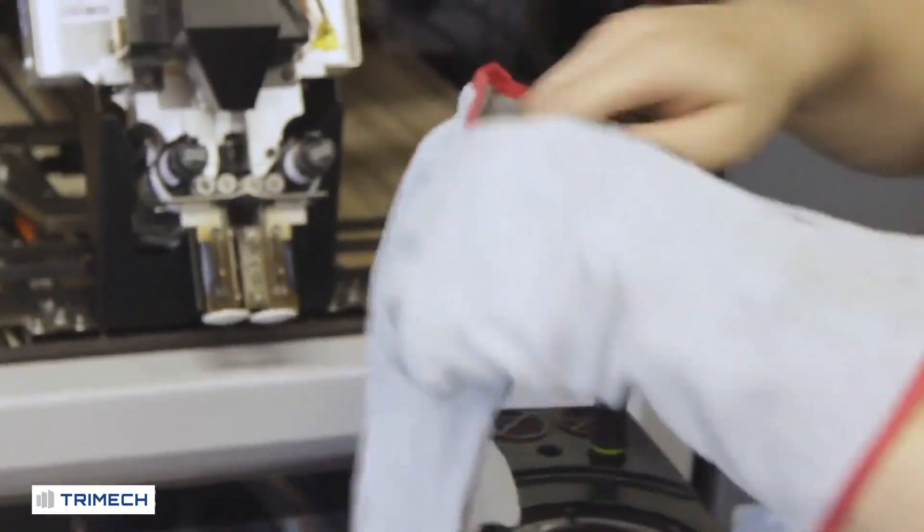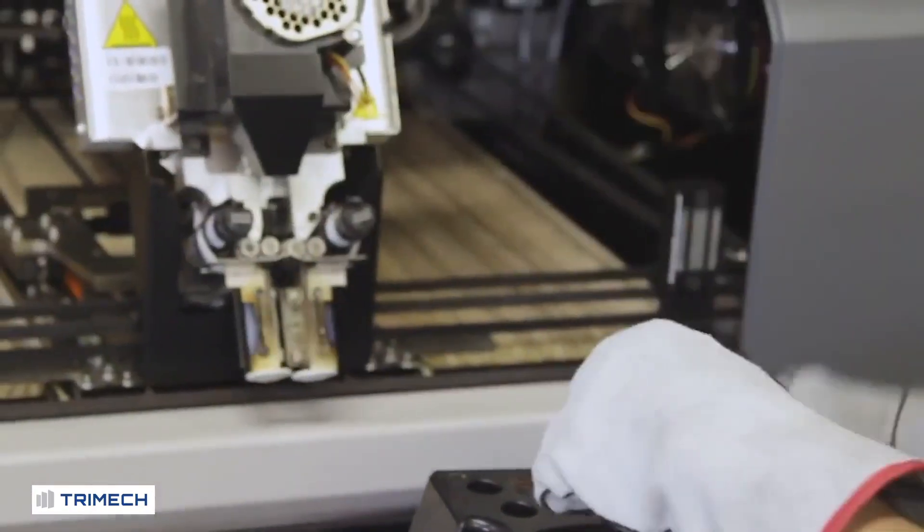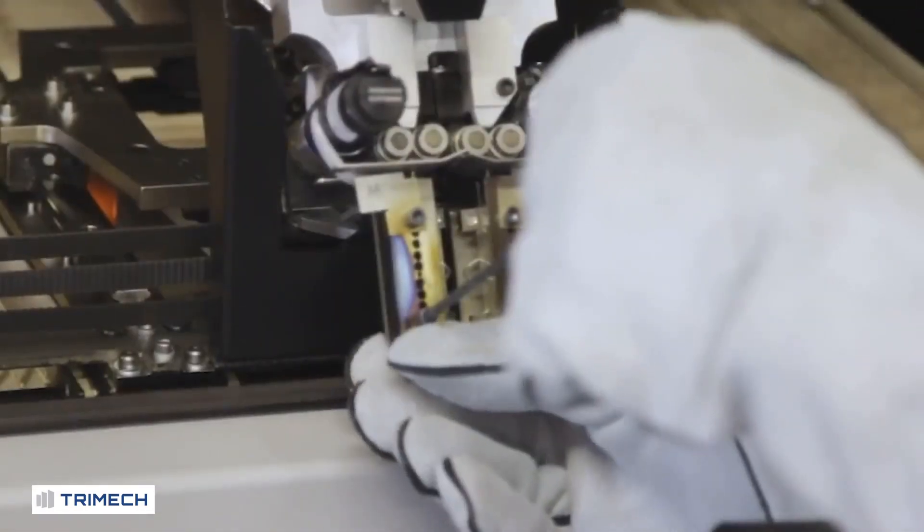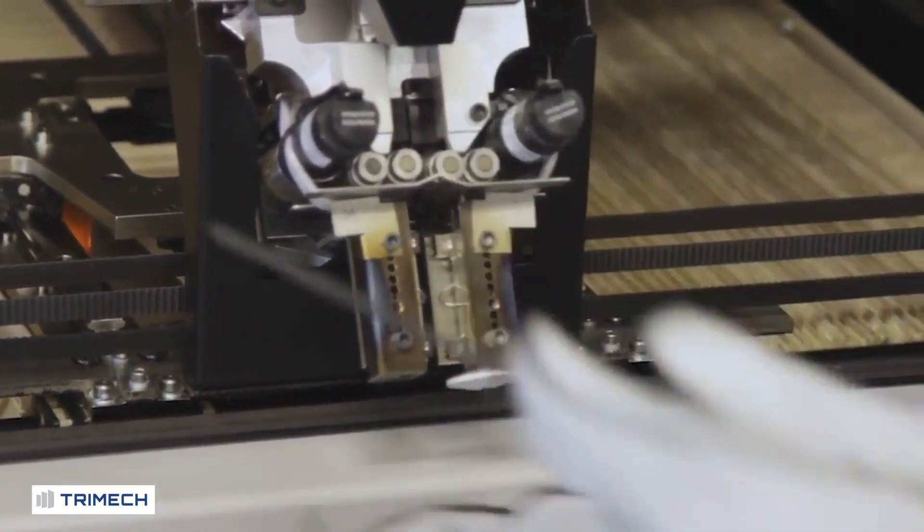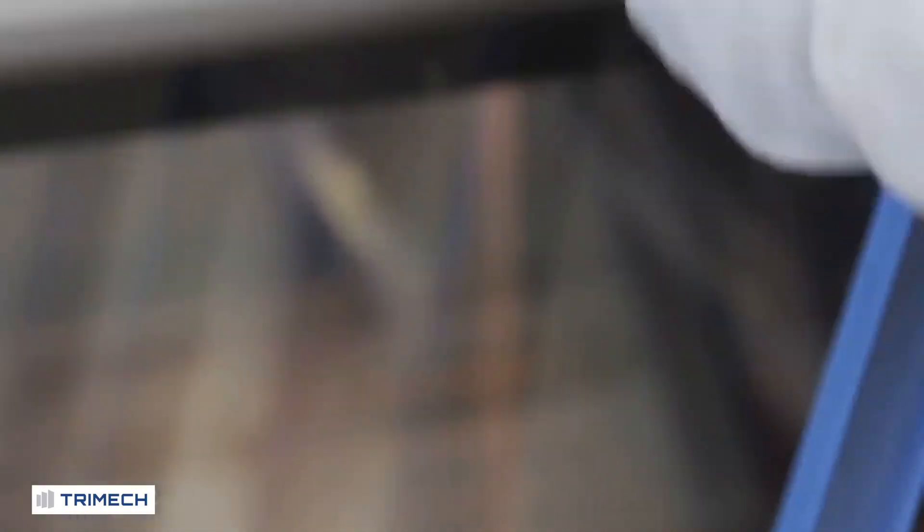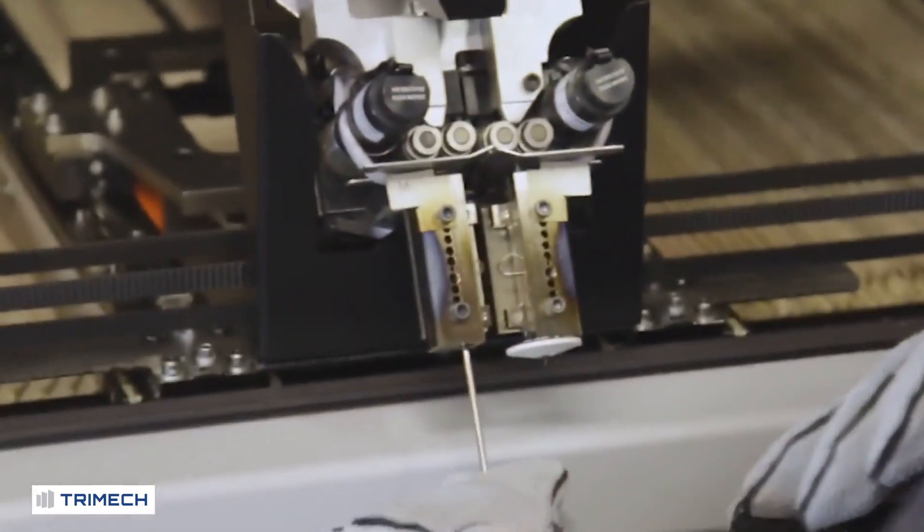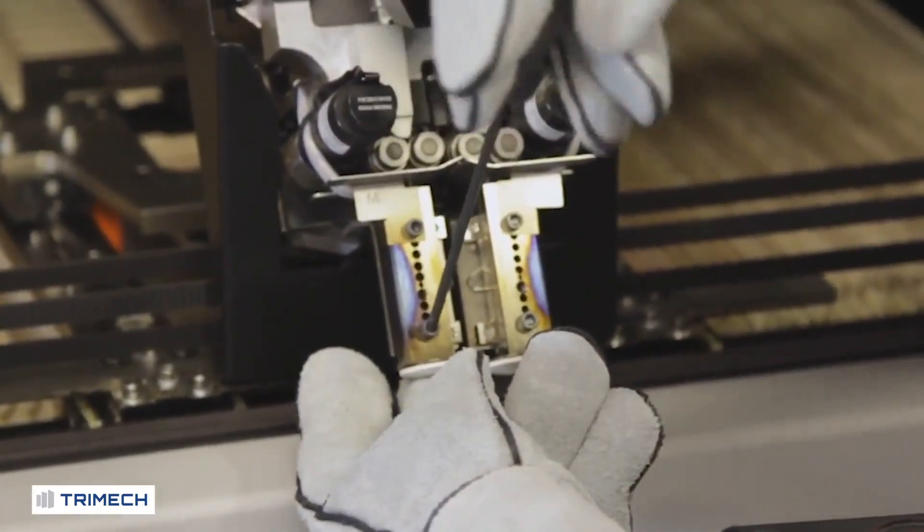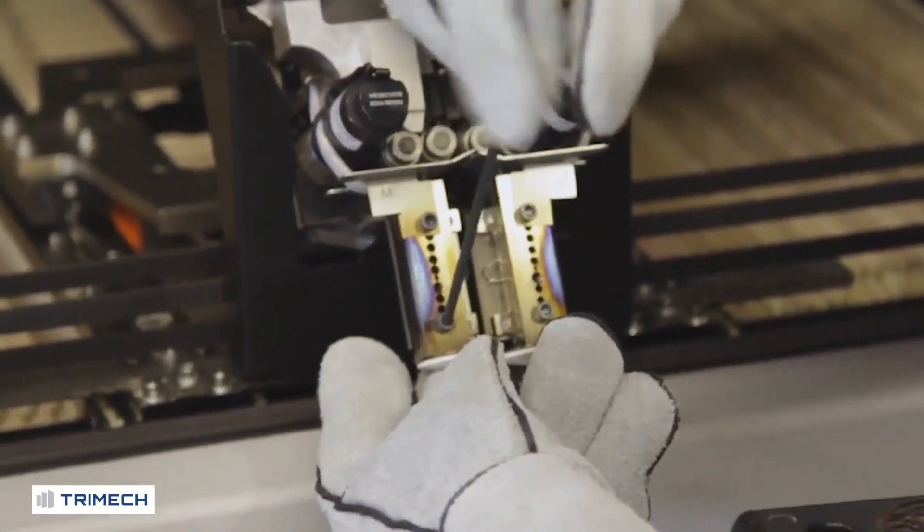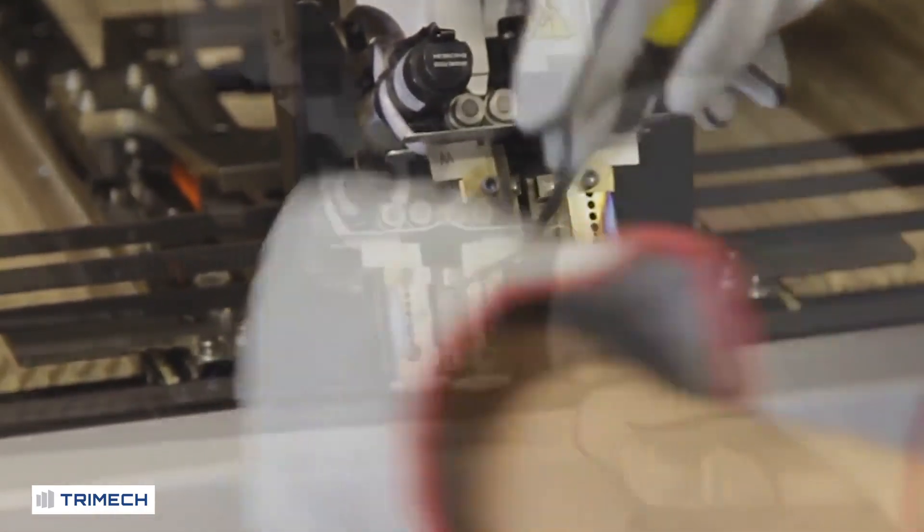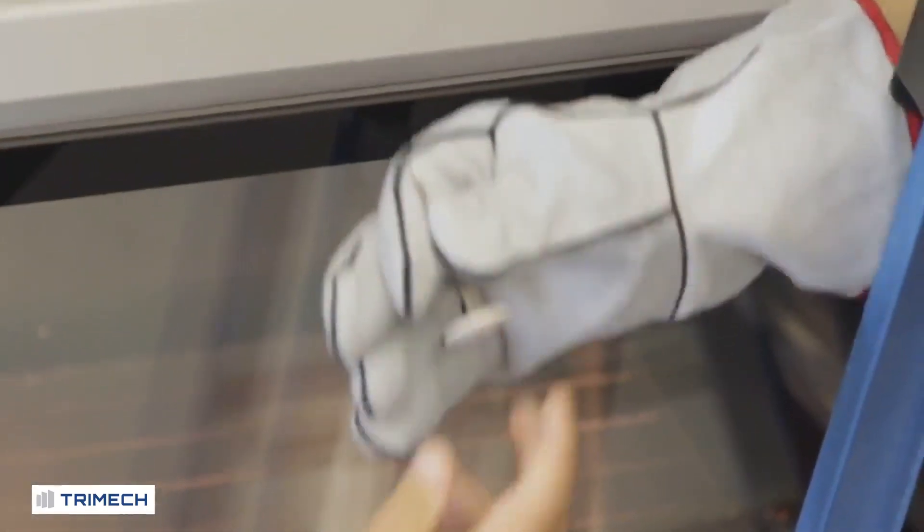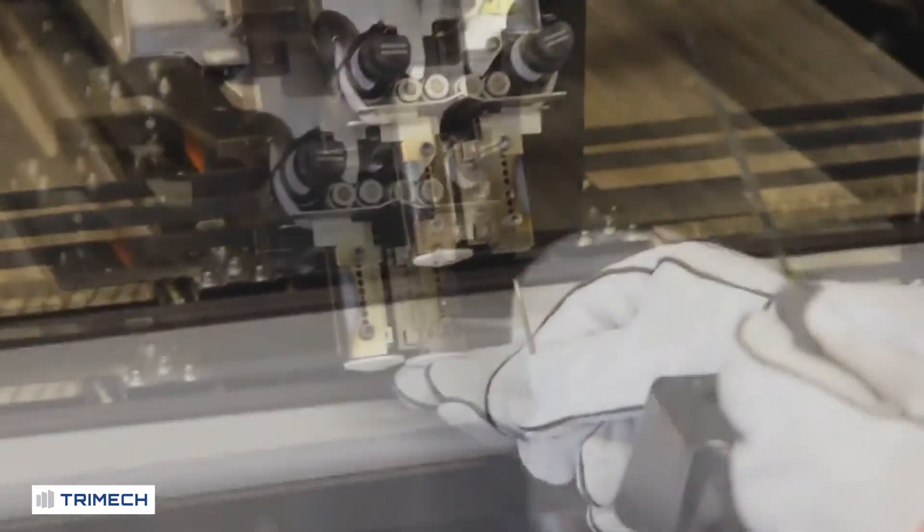Now that we have the head out and ready to service, we're going to put on some heavy gloves to make sure we do not burn ourselves. First, we're going to remove the model tip and replace it with a new model tip. Once the tip is in place, we're going to make sure that it's level with the liquifier. At which point we will tighten it to the liquifier. We then remove the support tip in the same fashion and install the new support tip accordingly.